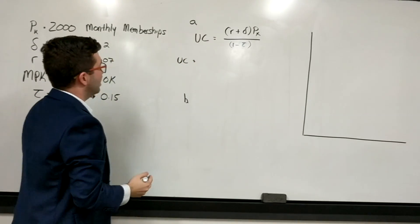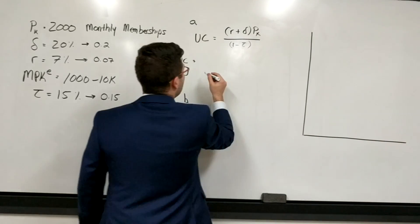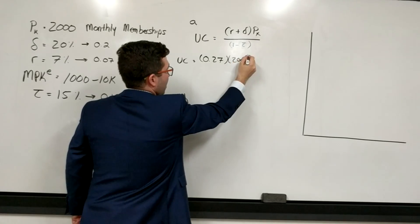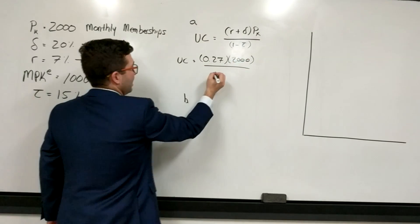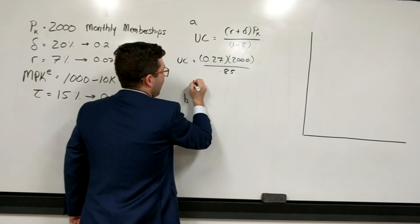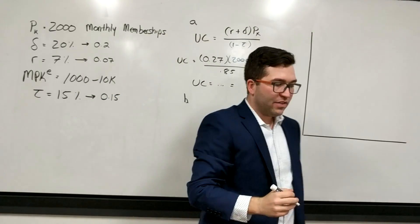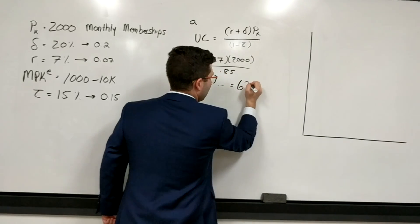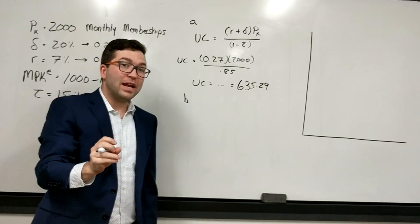So the user cost of capital, R plus D, if we look over here, is going to be 0.27, so we have 0.27. The price of capital is 2000, and then 1 minus tau, tau is 0.85. And so we do some algebra out, plug this into your calculator, and we're going to get 635.29.